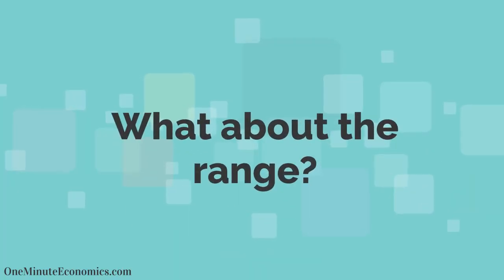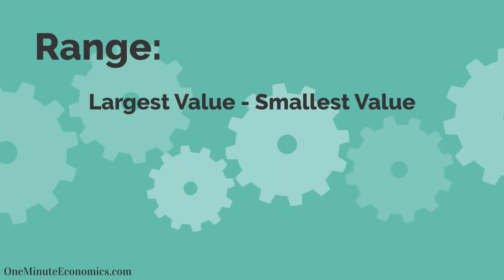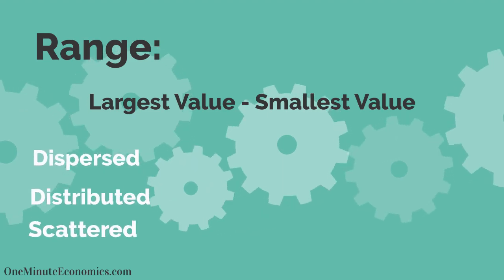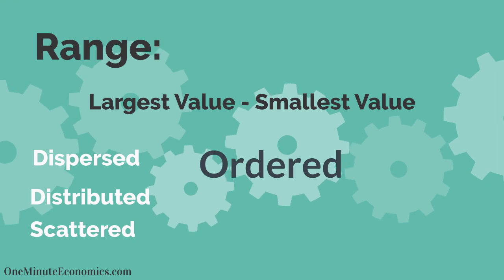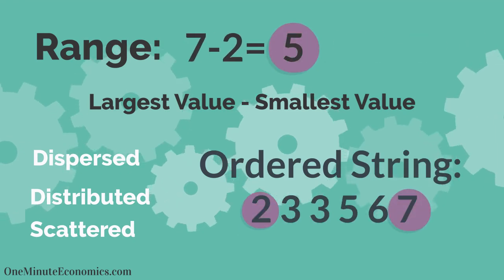What about the range? Well, as the name suggests, it represents the difference between the largest and smallest value. In other words, what it tells us about our dataset is how dispersed, distributed, or if you will, scattered it is. For our initial string, we obtain it by subtracting 2 from 7, so the range is 5. Simple enough, right?